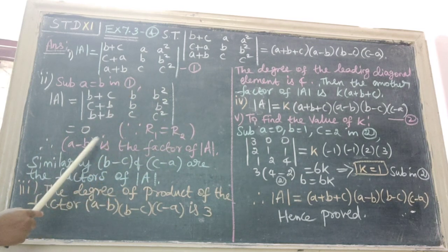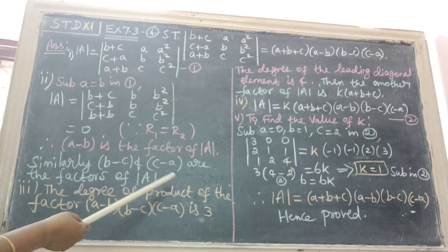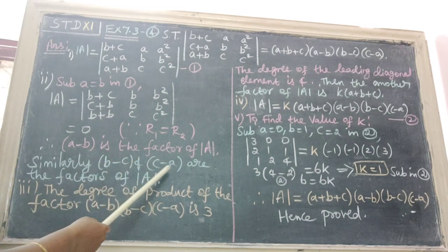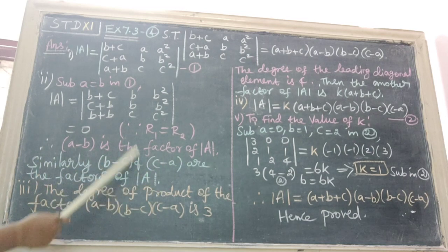Similarly, put B is equal to C and C is equal to A. We get B minus C and C minus A are the factors of determinant A.